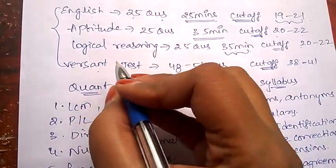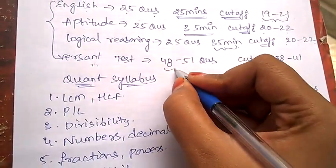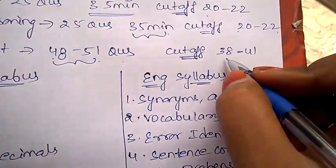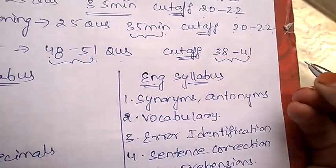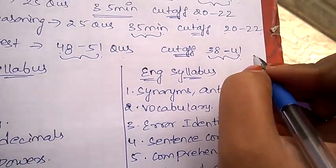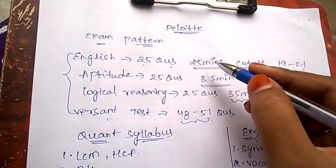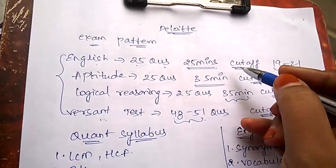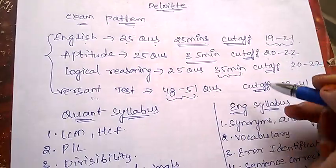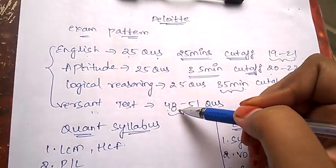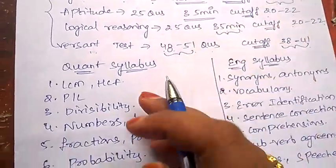Next, Versant test. Under Versant test there will be 48 to 51 questions and the cutoff will be in between 38 to 41 questions. Under Deloitte there will be a sectional cutoff and you need to clear that cutoff in order to enter into the second round. Make sure you clear all the sectional cutoffs.